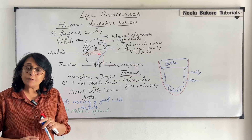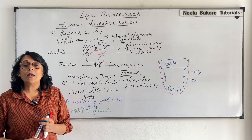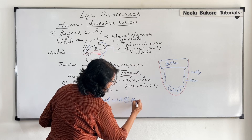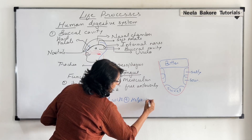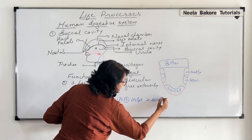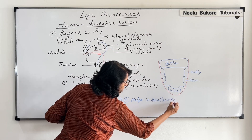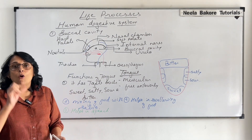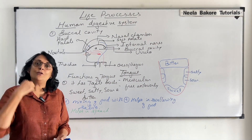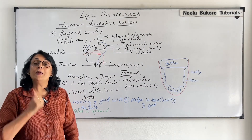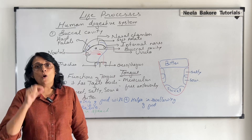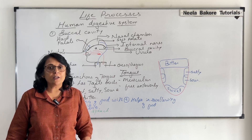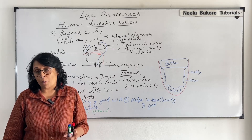The fourth function is that the tongue helps in swallowing of food. You can do this activity: if we hold the tip of our tongue and try to swallow something, we won't be able to do it. Similarly, if we hold the tip of our tongue and try to speak, our speech will not be clear and we won't be able to say the words properly.